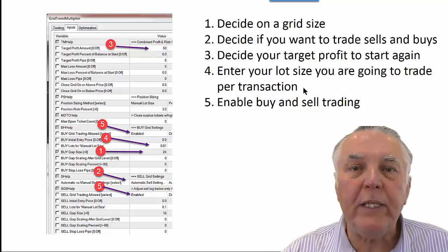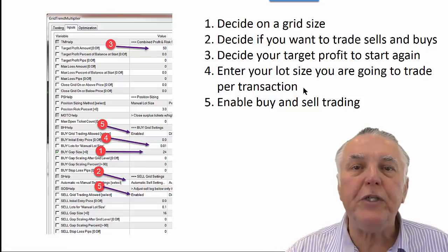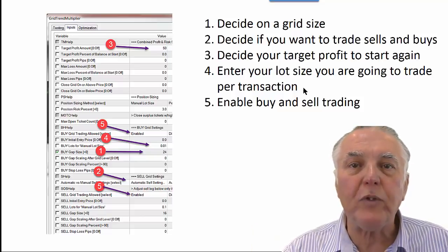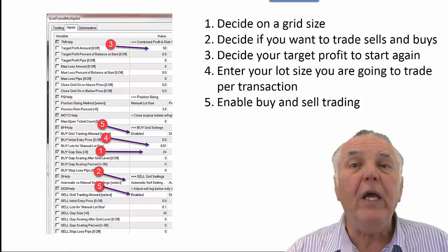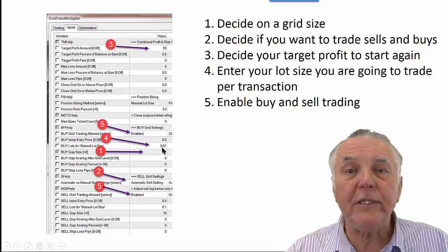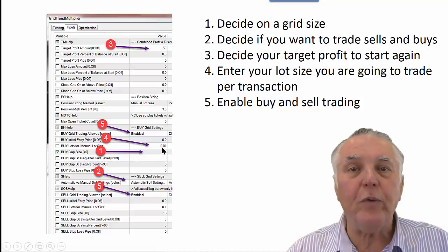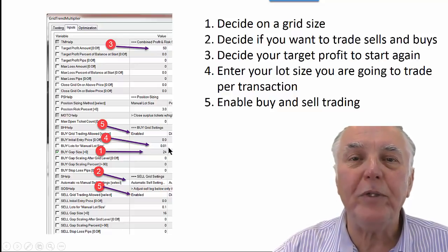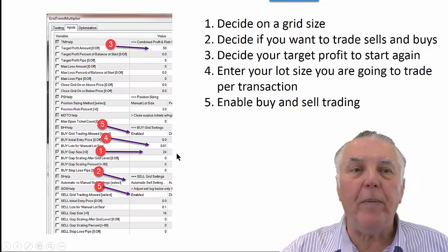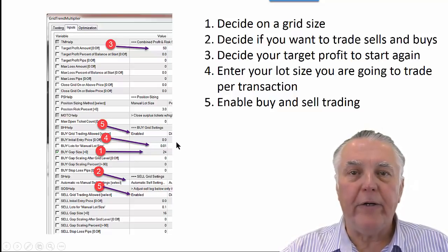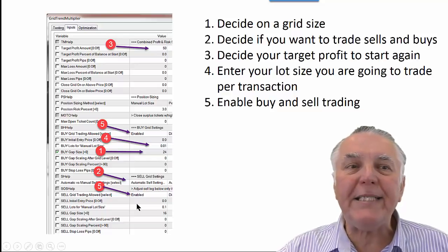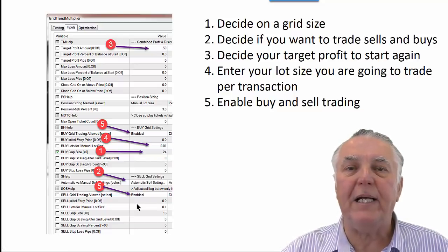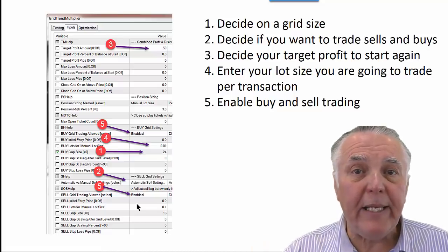Then the next very important setting that a lot of people don't acknowledge is position sizing, or lot sizing, because that also determines your risk. If your lot sizing is too big, your risk is going to be too big; if your lot sizing is small, your risk will be small. In this case, we're going for the smallest lot sizing possible, which is only a micro lot — 0.01. Then the next step is to simply enable both the buys and the sells if you're going to be doing that. That's how simple this EA is.